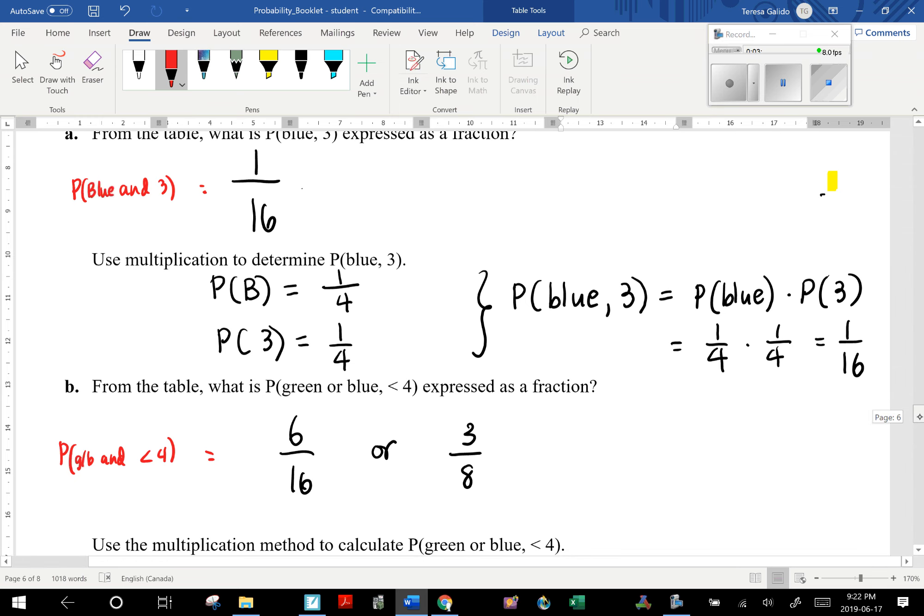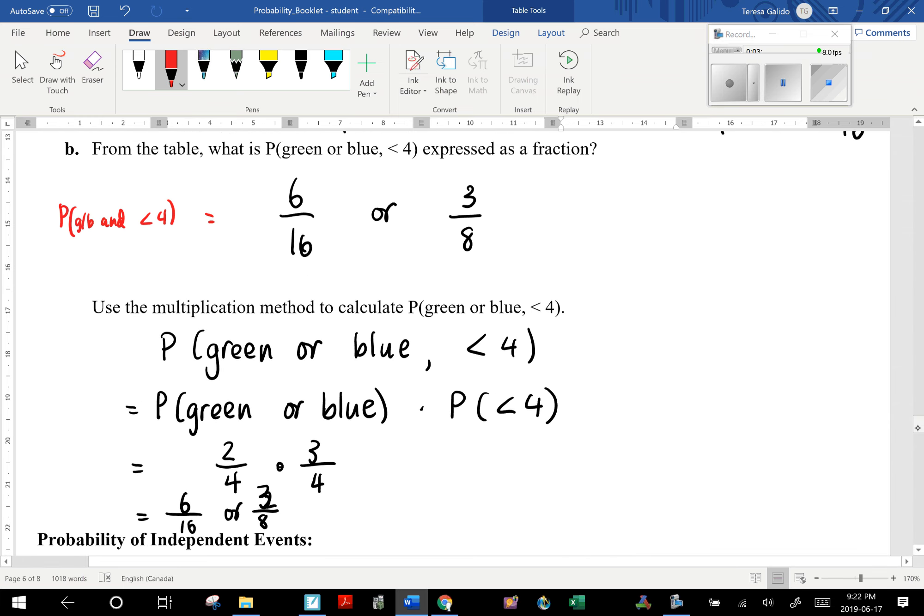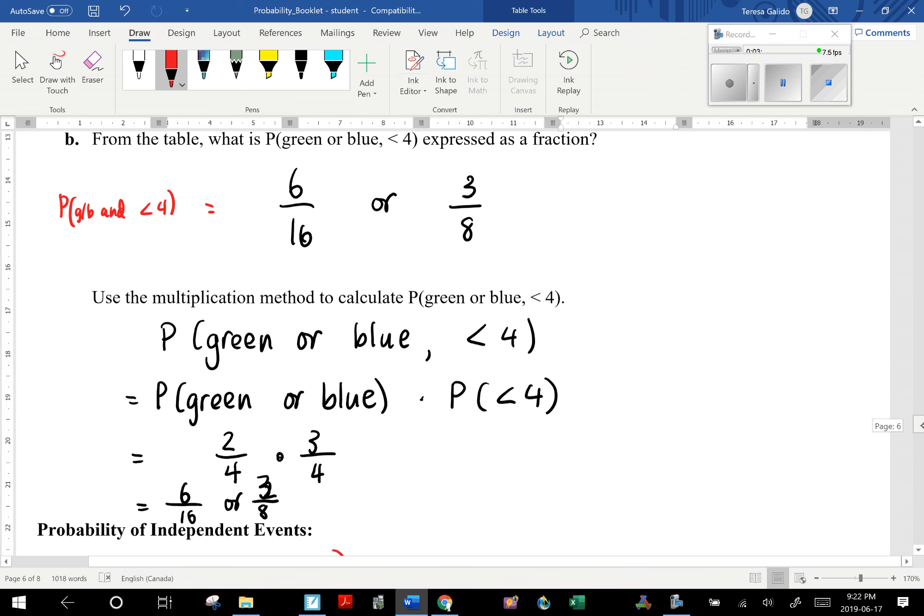How do we use the multiplication method to calculate this? We're simply finding the probability of green or blue times the probability of getting a number less than 4. The probability of getting green or blue is 2 out of 4. The probability of getting a number less than 4 is 3 out of 4. So if we do the multiplication, 2 times 3 is 6, 4 times 4 is 16, or 3/8.